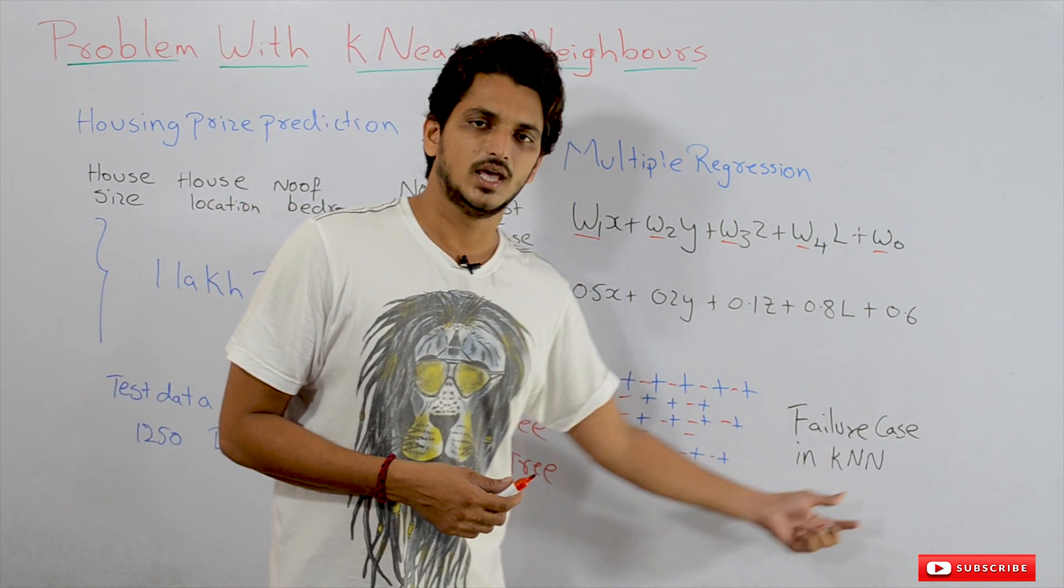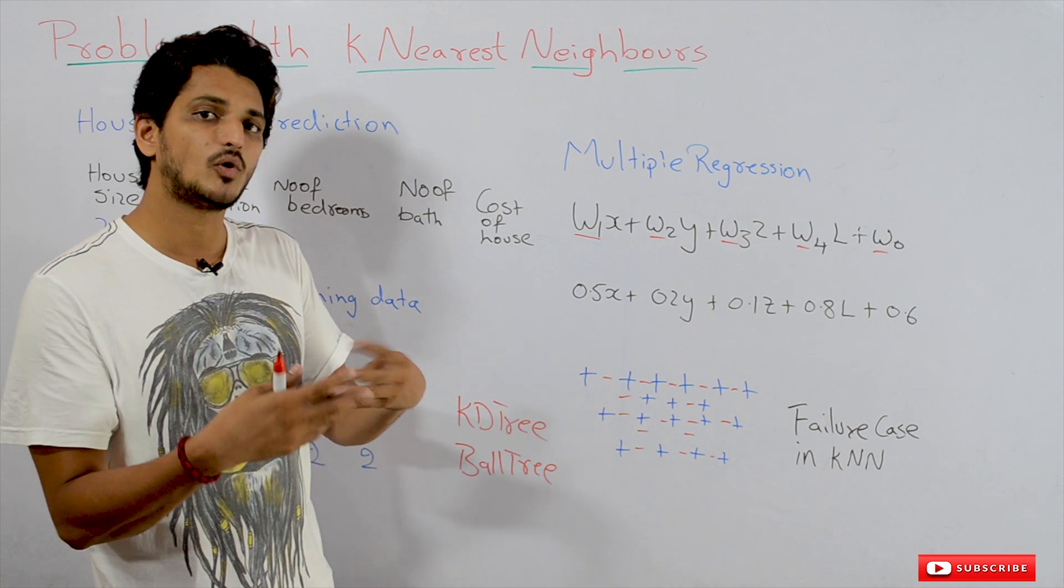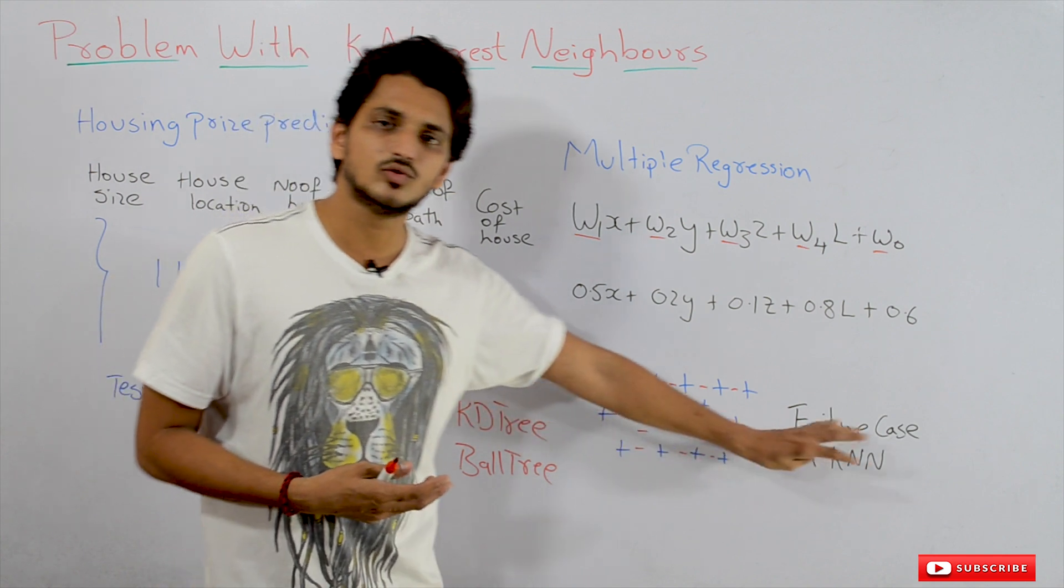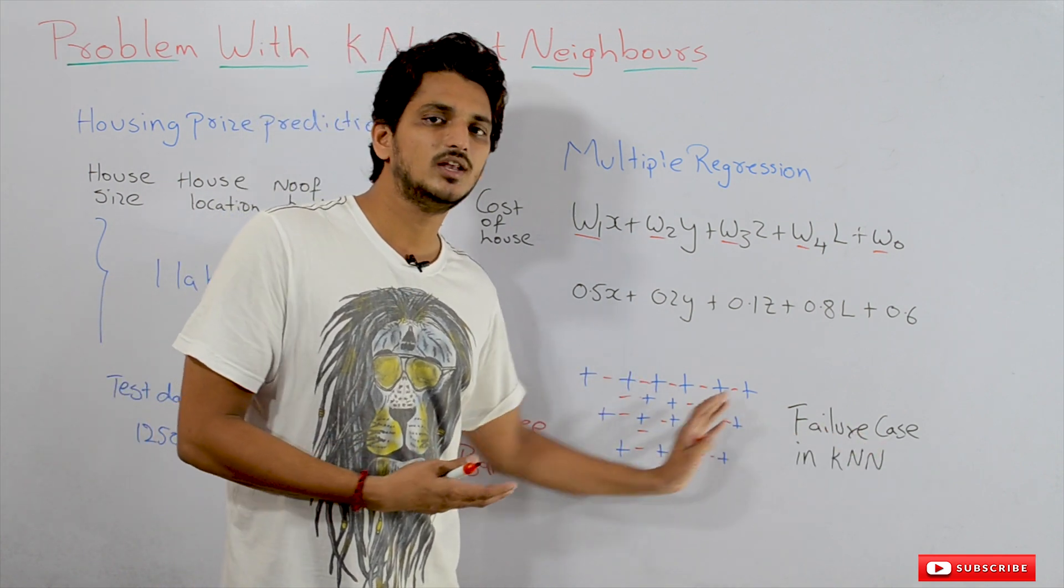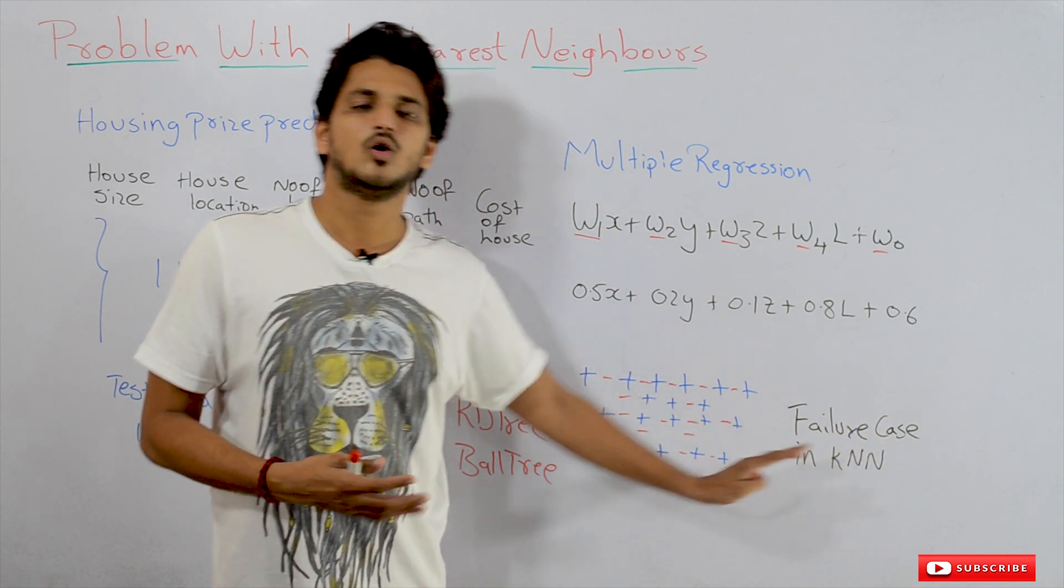If our dataset is randomly distributed between positive and negative points, then K-Nearest Neighbors won't work fine on this dataset. This is the failure case in K-Nearest Neighbors.